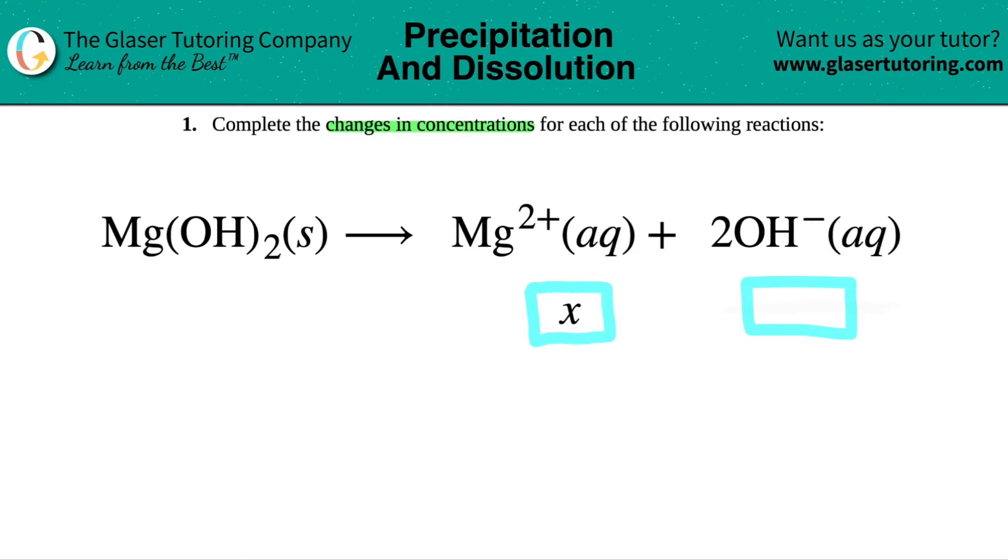We choose x because it's just a variable. We don't know how much it's changing, but we have to figure out what the hydroxide is changing by.